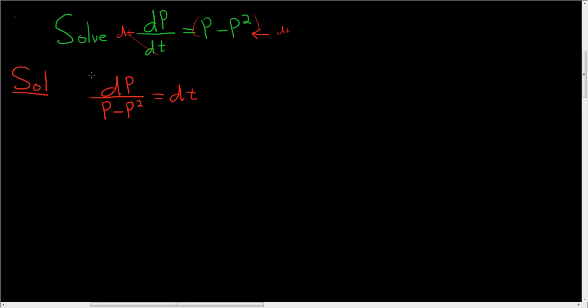Now we're going to integrate both sides. So we'll integrate the left-hand side and integrate the right-hand side. Now the integral on the left-hand side does take a bit of work. So let's rewrite the integrand as follows: 1 over p minus p squared.